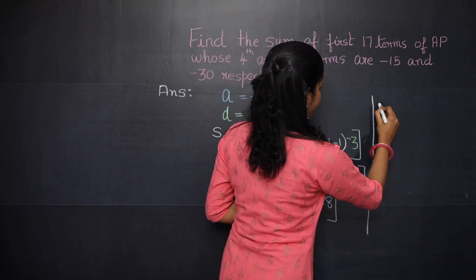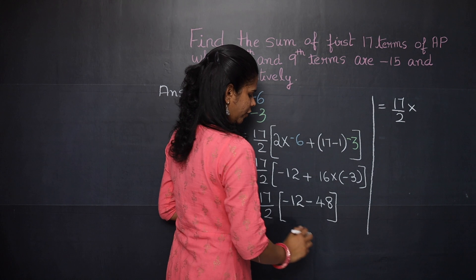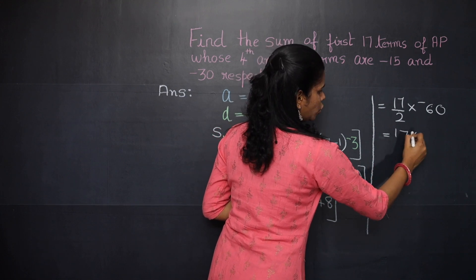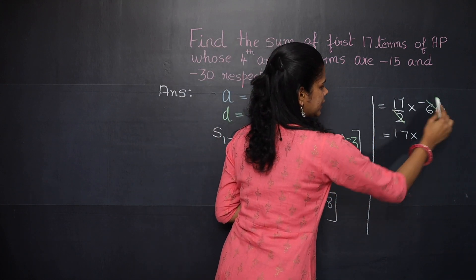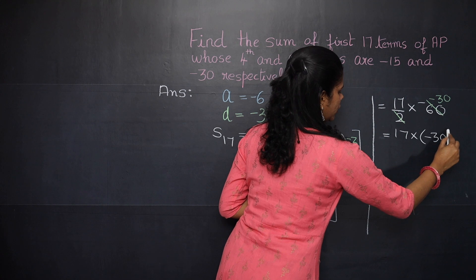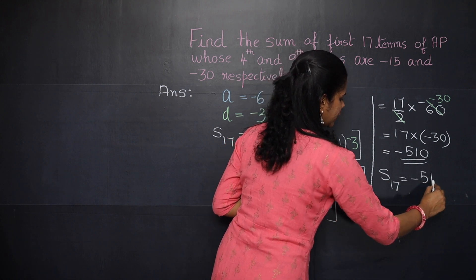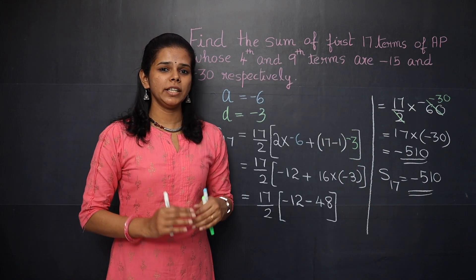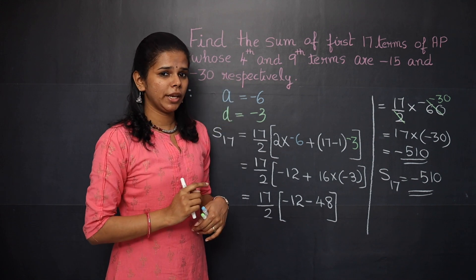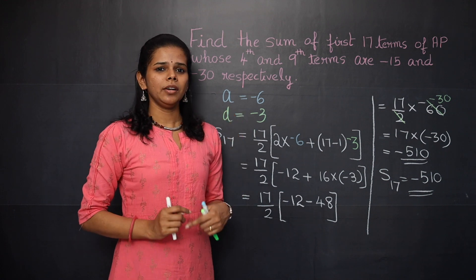So S17 = (17/2) × (−60) = 17 × (−30) = −510. The sum of the first 17 terms is −510. This shows how we find the sum when specific terms are given: we form equations, solve for a and d, then apply the SN formula.